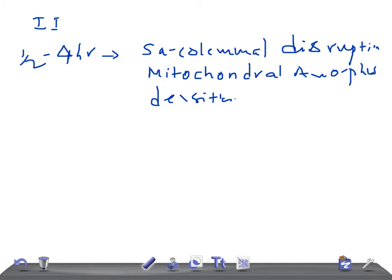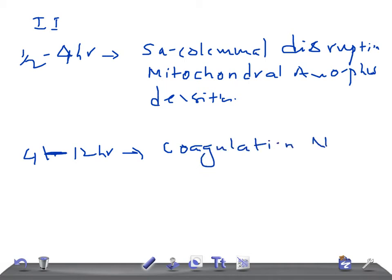From four hours to 12 hours, the gross feature occasionally shows dark mottling of the heart, though not always expected. Under light microscopy, there is the beginning of coagulation necrosis, edema, and hemorrhage. This is a really important point — after four hours, beginning of coagulation necrosis starts, along with edema and hemorrhages.